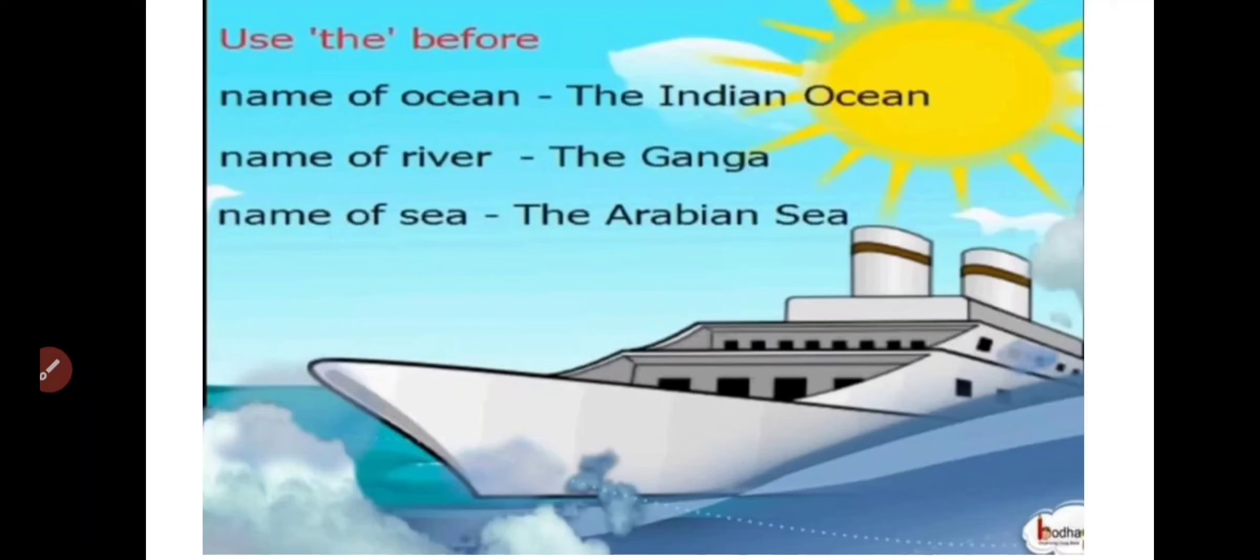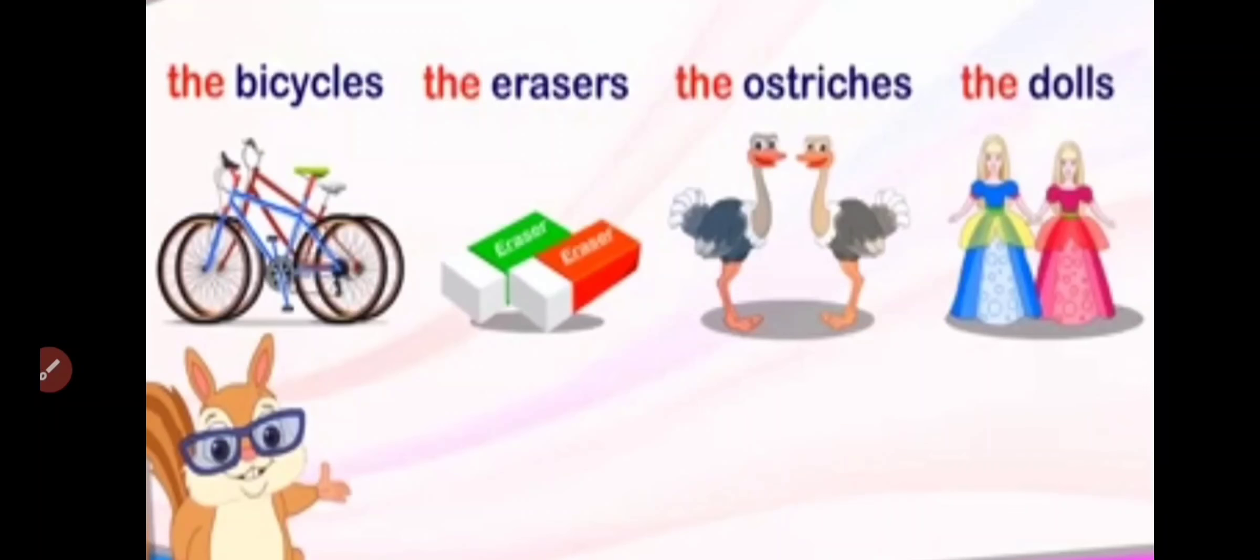Always remember, we use the before name of the ocean, name of the river, name of the sea, name of the holy books. Like here, name of the ocean, like the Indian Ocean. The Ganga, the Arabian Sea, that time we will use the. Here, more examples I have: the bicycles, the erasers, the ostriches, the dolls.